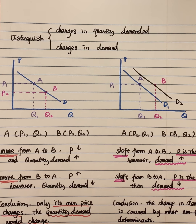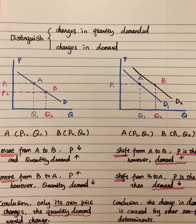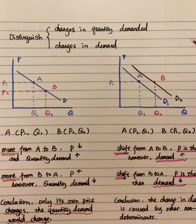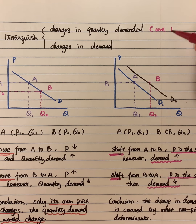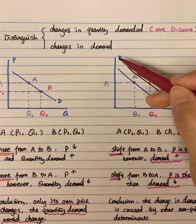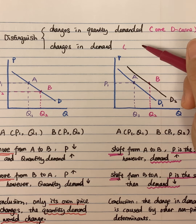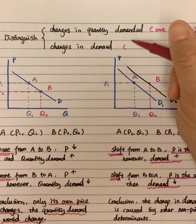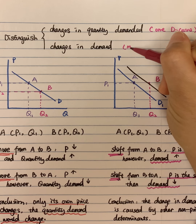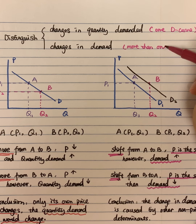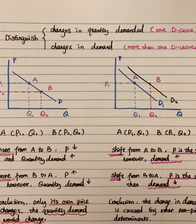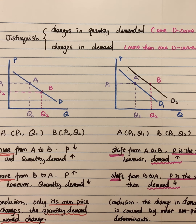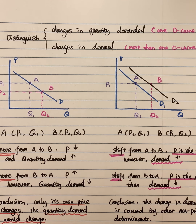When distinguishing changes in quantity demanded and changes in demand, notice from our graph: changes in quantity demanded involve only one demand curve, while changes in demand involve at least more than one demand curve. This is how we explain the difference between the two concepts. Hope it will be helpful for you. Thank you.